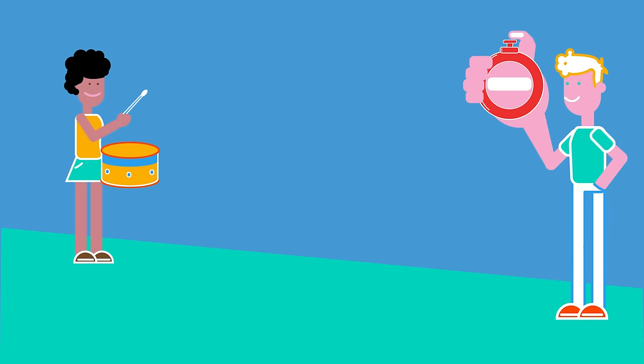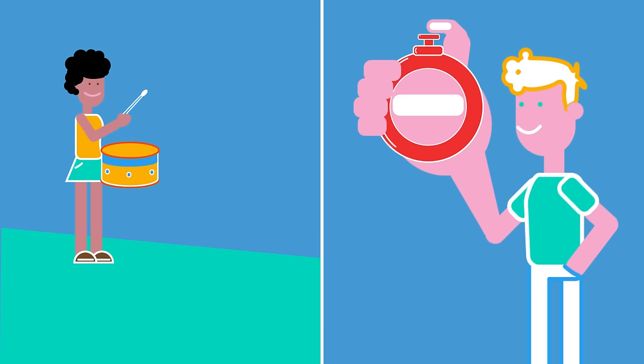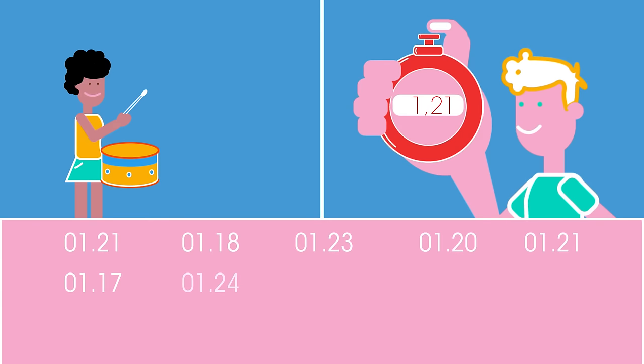One option is to get someone to stand exactly 400 meters away with a stopwatch. Make sure you can clearly see each other. When you are both ready, loudly bang the drum with your drumstick. Your partner starts the clock when they see you hitting the drum and stops it when they hear the sound. Repeat this experiment a number of times, then take the average of all the readings.